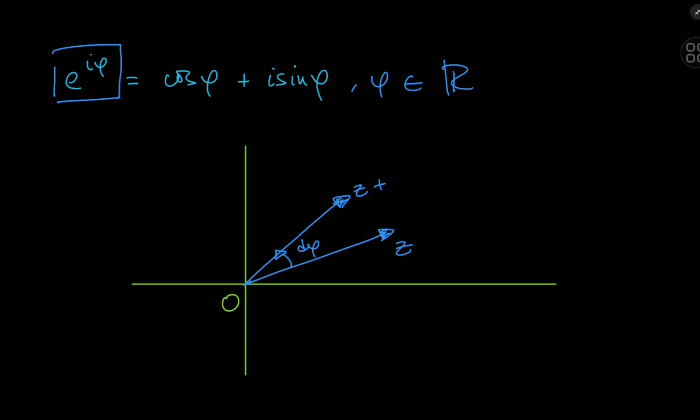We saw in the last video that if we take any complex number z and we multiply it by i, then we get a vector perpendicular to z.